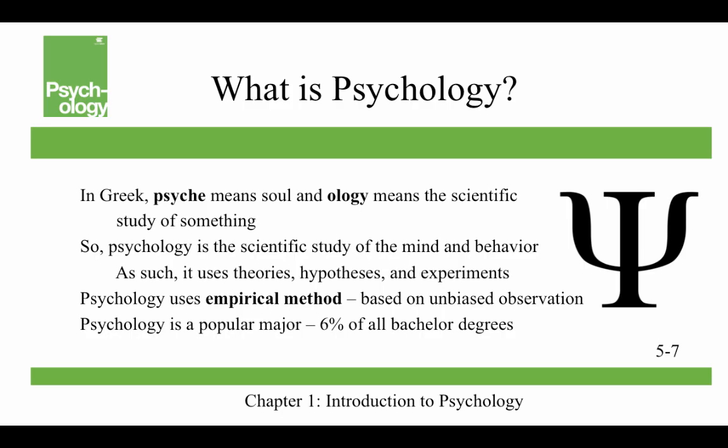In Greek, psyche means soul, and ology means the scientific study of something — so that could be the study of the soul. The way we consider psychology to be today is the scientific study of the mind and behavior. As such, it uses theories, hypotheses, and experiments. Psychology also uses the empirical method, which is unbiased observation.